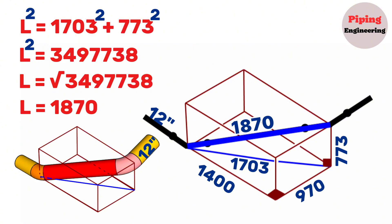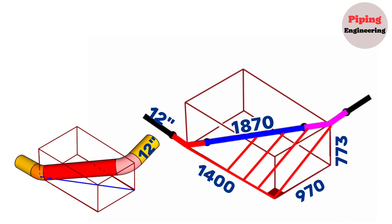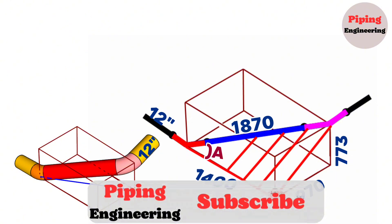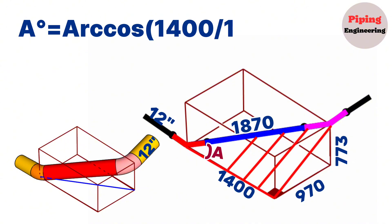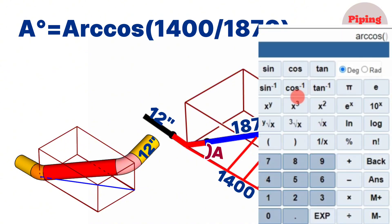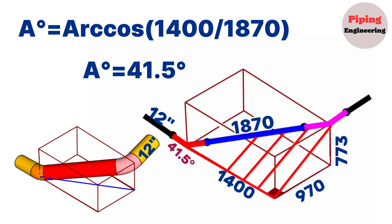Now let's calculate the cut elbow angles. We color one elbow red and the other pink. For the red elbow, we complete the right triangle created by the red dashed lines after the pipeline turns from south to east. In this right triangle the adjacent side is 1400mm and the hypotenuse is 1870mm. The cutting angle A equals arc cosine of 1400 divided by 1870, which gives approximately 41.5 degrees.